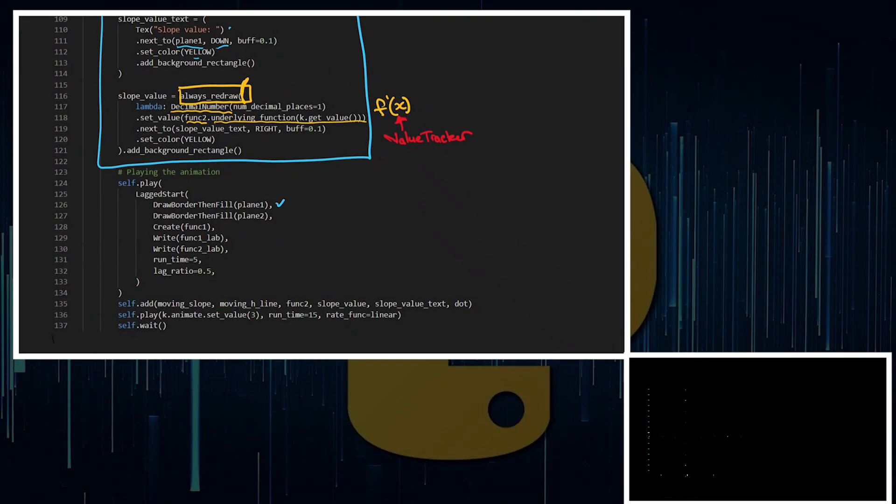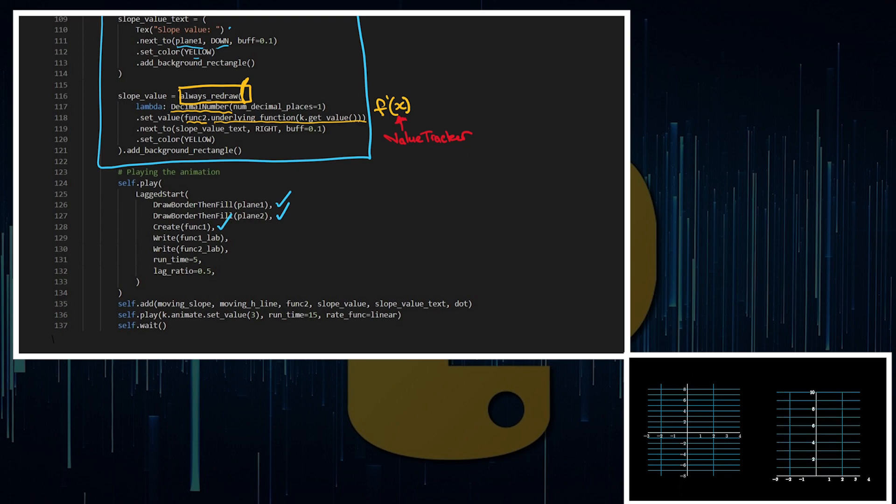Then you can see, all I'm doing is I'm drawing the two planes, creating the function, creating the labels as a lagged start. Then I'm going to add everything, and where all of the magic is happening is within the value tracker. So we animate k to become the value of 3. So it animates out from negative 3 to positive 3 in 15 seconds.